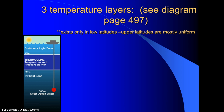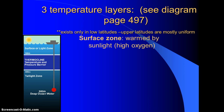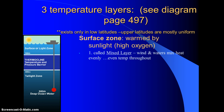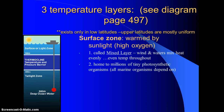Near the equator and mid-latitudes, these layers exist. The top part is the surface zone — you can see this diagram here. It's warmed by the sun. Sunlight can penetrate to about 100 meters deep, and it's very rich in oxygen because you have churning water and wave action pulling in oxygen. This layer is also called the mixed layer — wind and water mix the heat pretty evenly, so it's an even temperature throughout. It is home to millions of tiny photosynthetic organisms using the sun's energy.